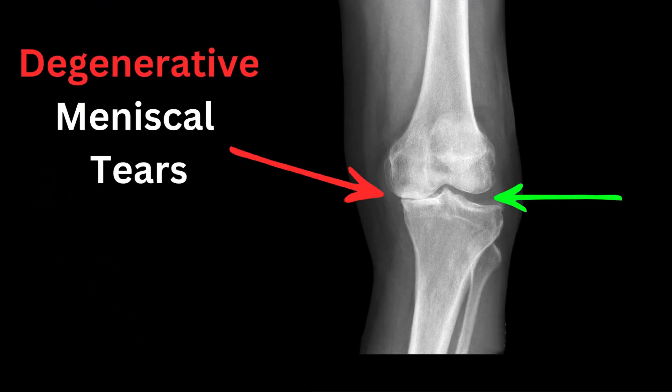The first group of people have what we call degenerative meniscal tears. In this x-ray of the knee, you can see how on the outside of the knee, where the green arrow is pointing, there's a gap between the bones. The reason for this gap is that the bones are covered in cartilage, which we can't see on the x-ray. As people develop arthritis, usually due to wear and tear as we get older, the cartilage is worn out and the gap narrows, which is what's happened on the other side of the knee where the red arrow is pointing. As part of the process of arthritis, the meniscus gets brittle and squashed and is often torn, but the main underlying problem and reason for this person's pain is their arthritis.